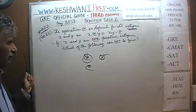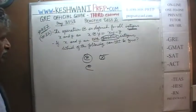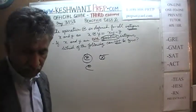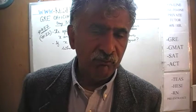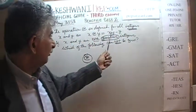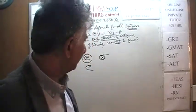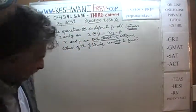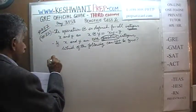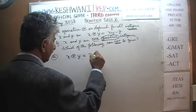They go on to say: if x and y are both positive integers — that is the condition we must fulfill — which of the following cannot be 0? They give us 5 answer choices; 4 of those will turn to 0 in some cases. Our job is to find the one instance where it can never turn to 0. Let's take a look at answer choice A. Answer choice A is exactly what is given to us.